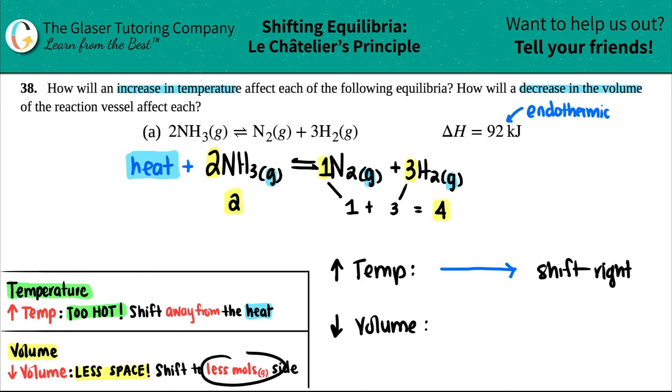If you're decreasing the volume, you go to the less mole side. Two is less than four, so you shift towards the less mole side. In this case we will shift to the left, which means this will now increase and this will now drop.